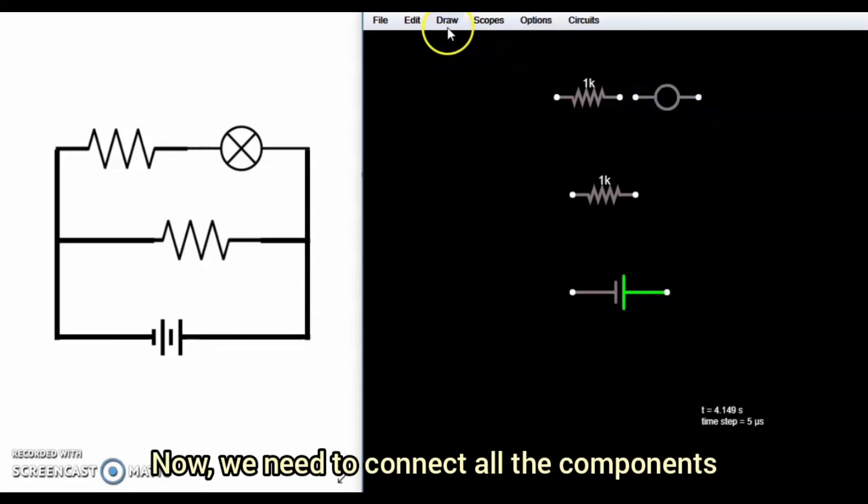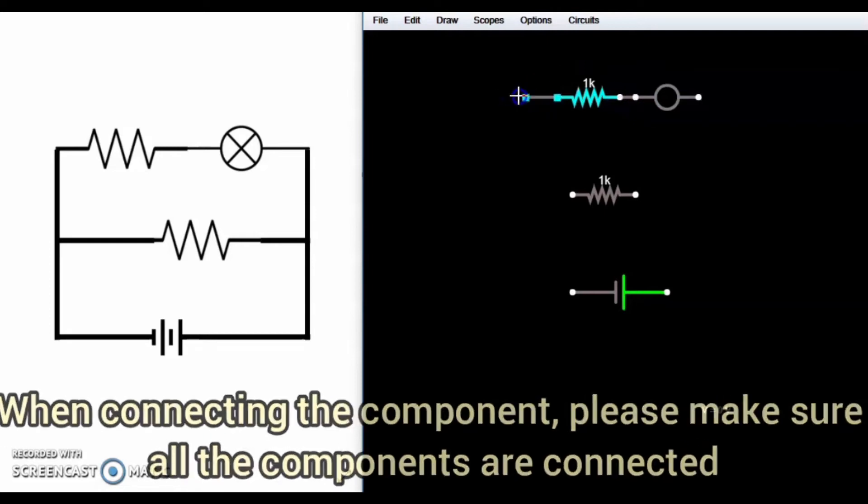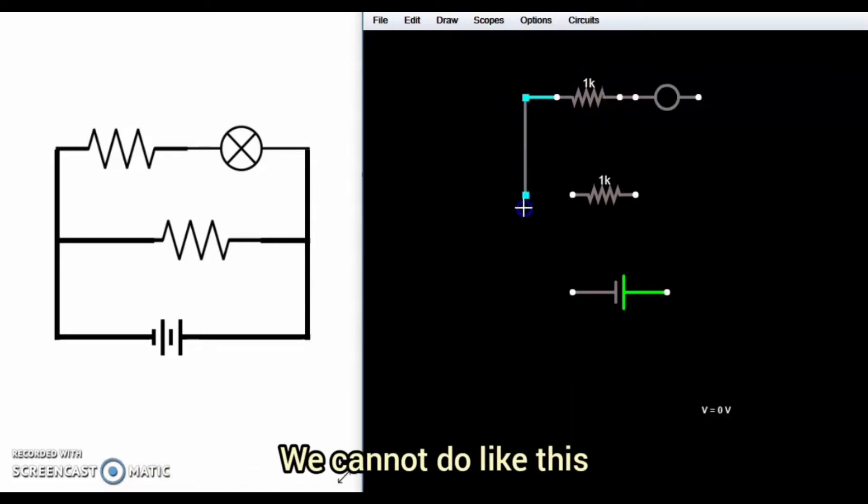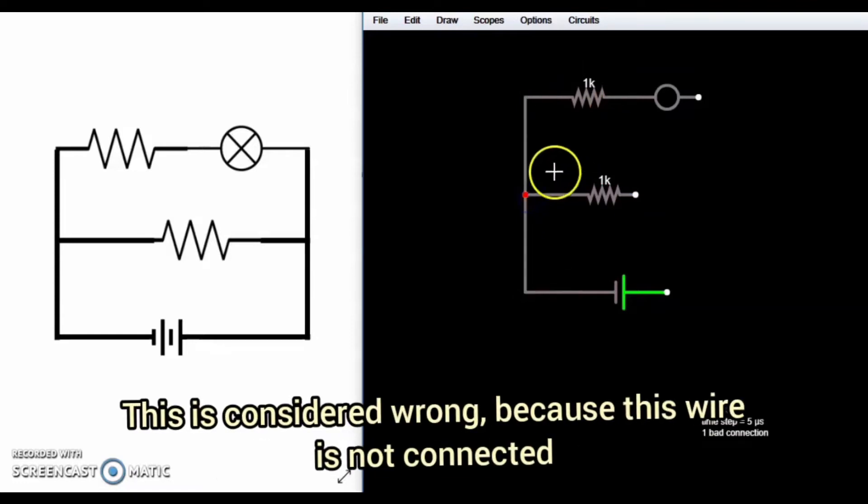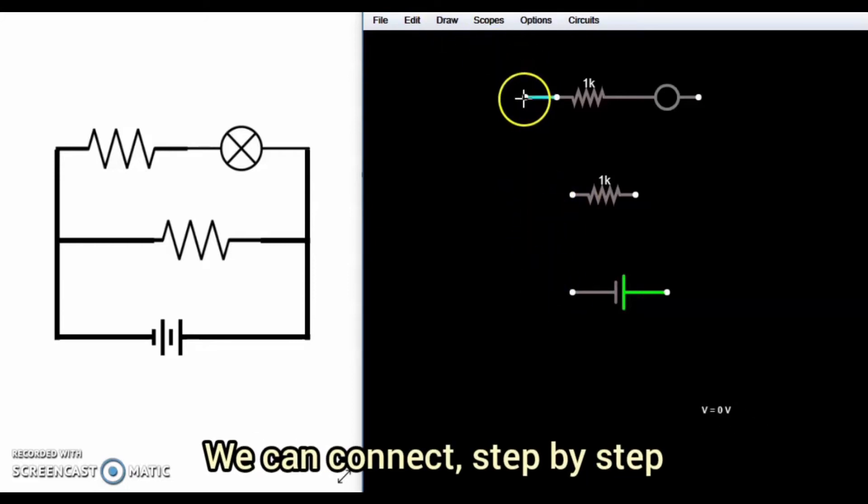Now we need to connect all the components. When connecting the components, please make sure all the components are connected. We cannot do like this. This is considered wrong because this wire is not connected. So what we can do, we can connect step by step.